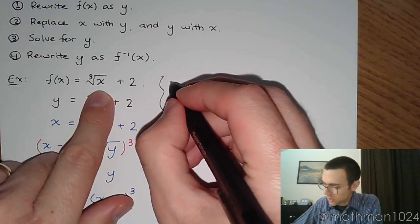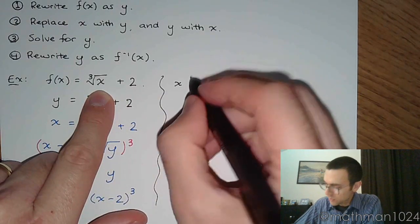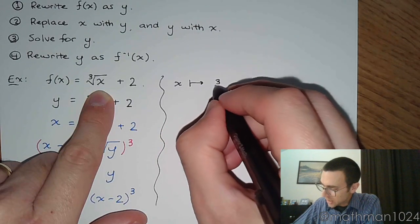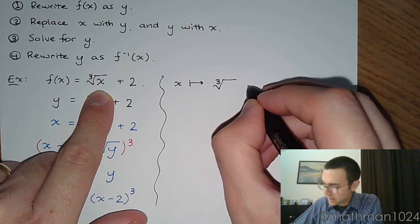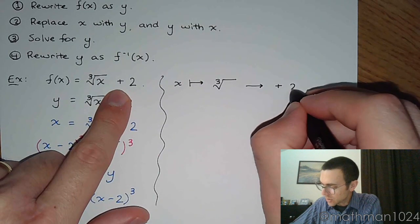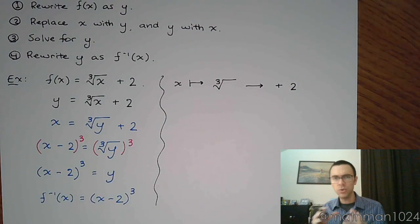If you imagine here for this function, you start with x. Now I want you to think about what you do. Once you plug in x, the very first thing that you do is that you have to do the cube root of that, and then you have to add 2. That's how the order of operations are going to work. You do the cube root, you add 2.